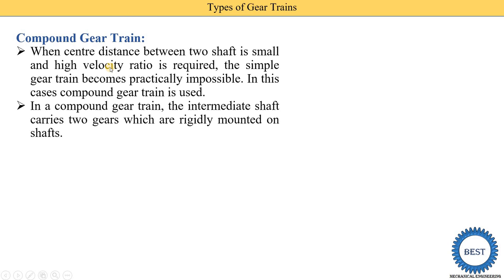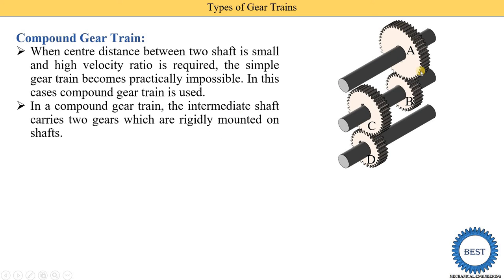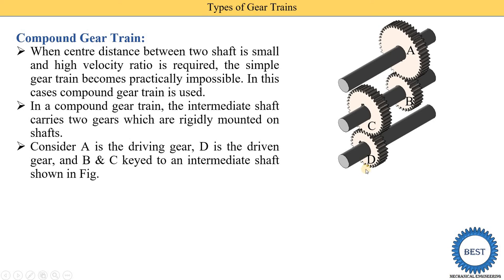The difference between simple and compound gear trains: in a simple gear train, only one gear is installed on one shaft. In a compound gear train, the intermediate shaft carries two gears which are rigidly mounted on the shaft. In this diagram, gear A is the driving gear, B and C are intermediate gears mounted on one shaft, and D is the driven gear on the driven shaft. If the intermediate shaft carries two or more gears, it is called a compound gear train.